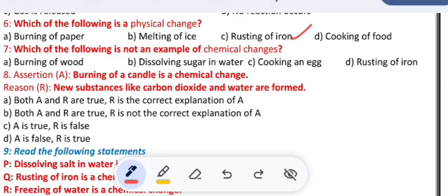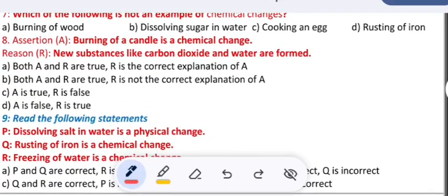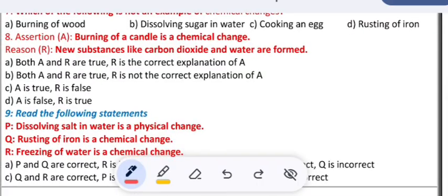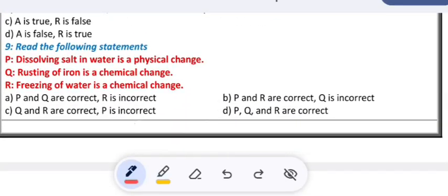Which of the following is not an example of a chemical change? Assertion A: burning of a candle is a chemical change. Reason R: new substances like carbon dioxide and water are formed. In the similar way, four options are given. Which one is correct? You can select the correct one.